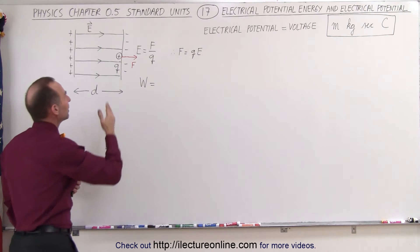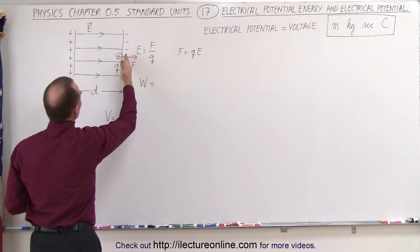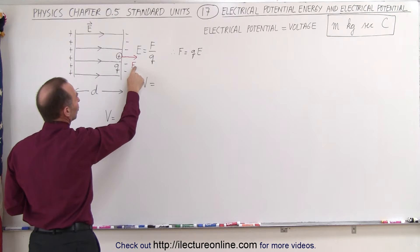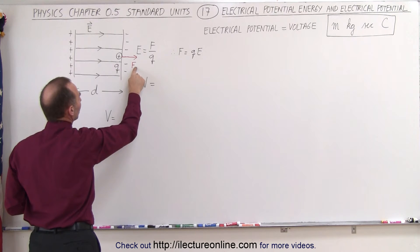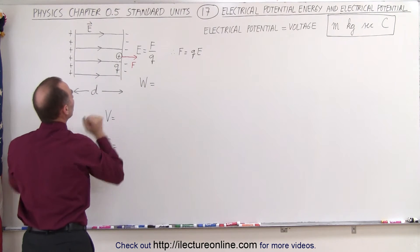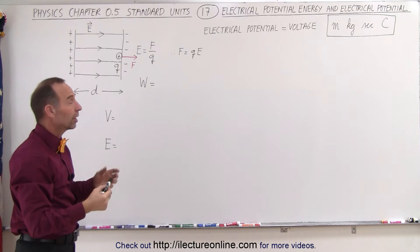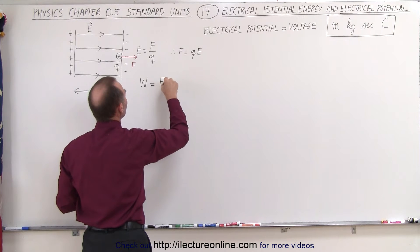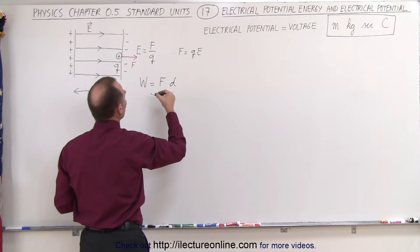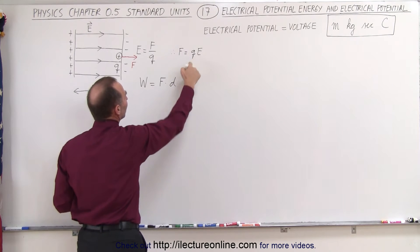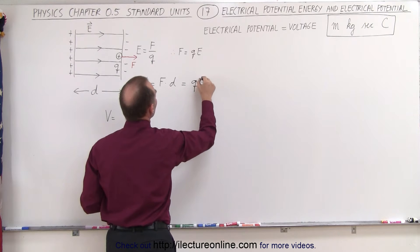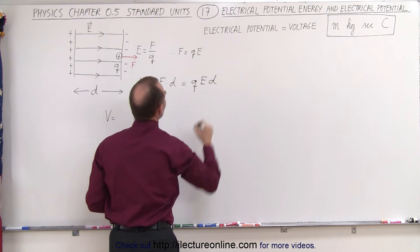Now, what would happen if we take this charge and push it across to the other side? We'd have to apply a force equal to this force and move the distance d between the two plates. The work done, therefore, is equal to the force times the distance, and we realize that the force is equal to the charge times the electric field strength. So this is equal to Q times E times D.